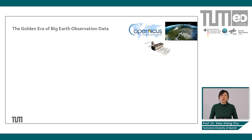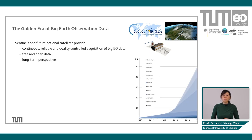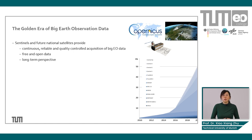We have inevitably arrived in the golden era. The Sentinel missions and other national satellites provide continuous, reliable, and quality-controlled Earth observation data. More importantly, these data are all free and open to everyone who wants to use them. Also importantly, future missions are already under discussion, which means there will be guaranteed long-term access to the data.